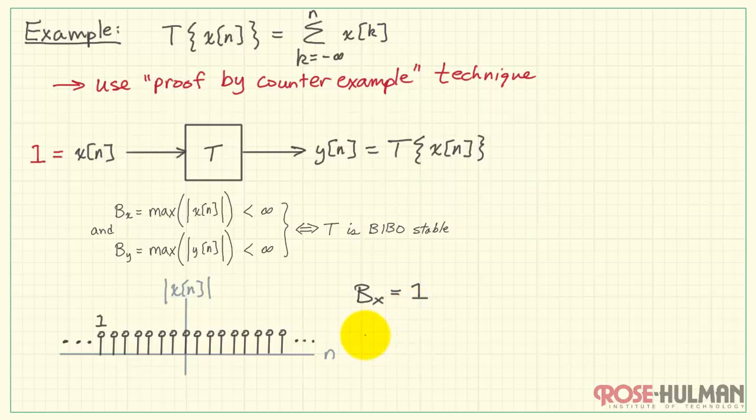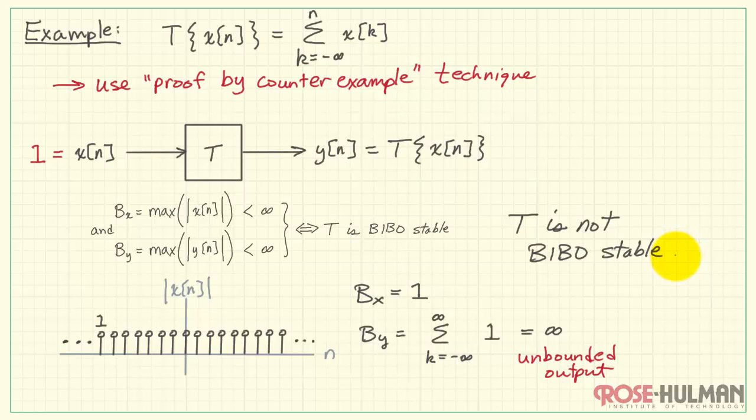We'll find that for this particular input, as we consider what's happening with the output calculation, we are always summing from minus infinity up to the present value n. If x has always been equal to 1, then we see that, really, for any value of n, all the way up to positive infinity, b_y is also equal to infinity. We're summing an infinite number of bounded values. Therefore, the output is unbounded, and this system is not BIBO stable.